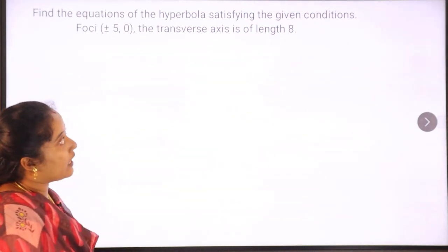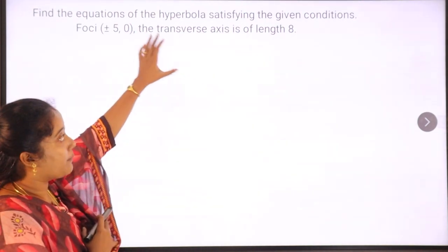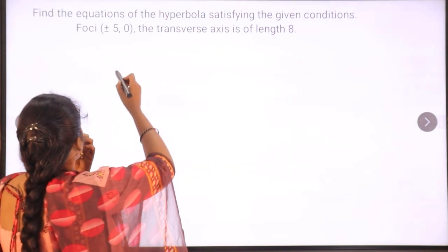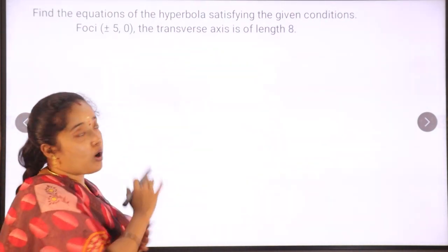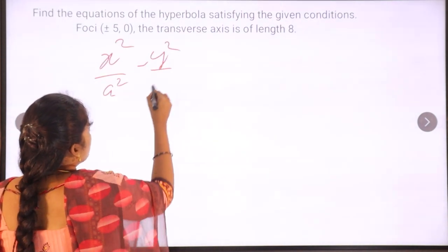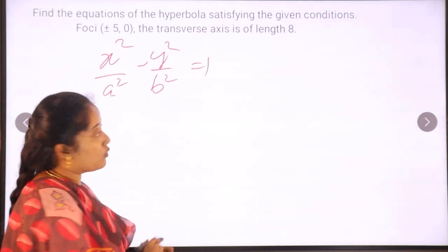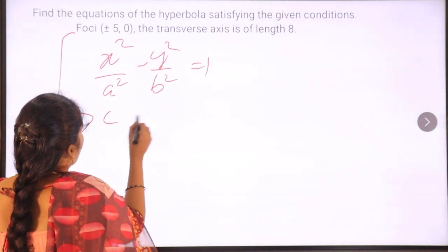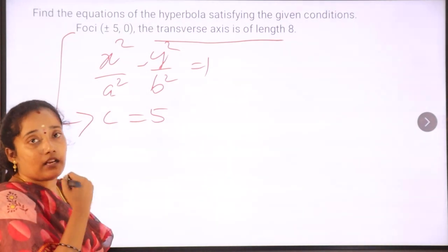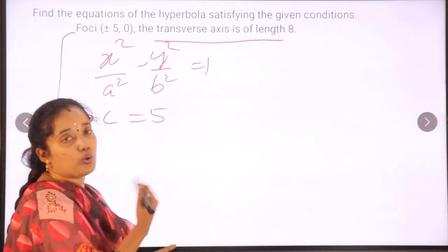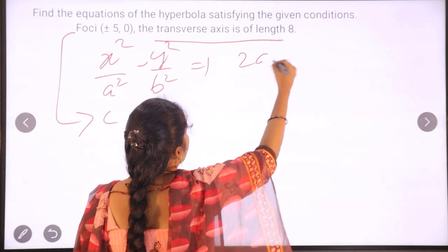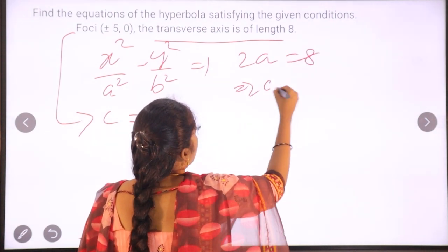Find the equation of a hyperbola. We have to find the equation for the given conditions. The foci are at plus or minus 5 comma 0. The standard equation is x squared by a squared minus y squared by b squared equals 1. From the focus value, c equals 5. The length of the transverse axis is 2a, which equals 8, so a equals 4.